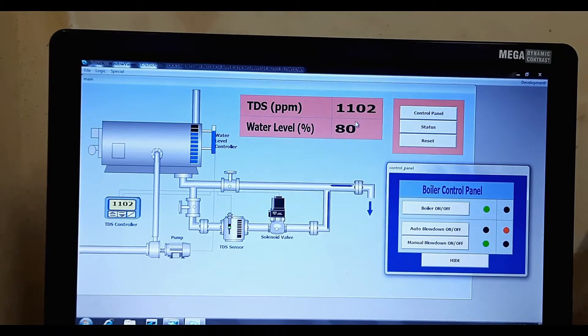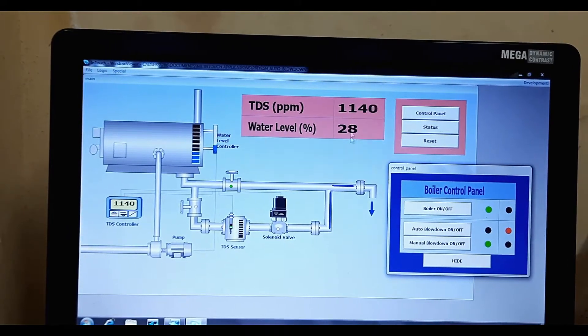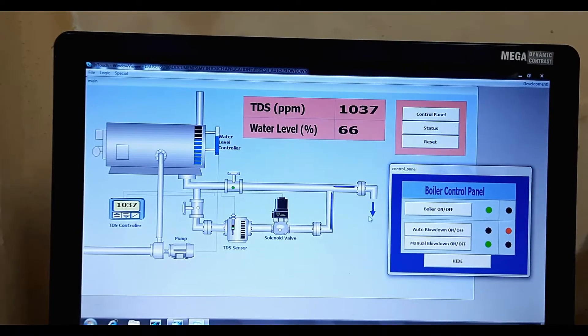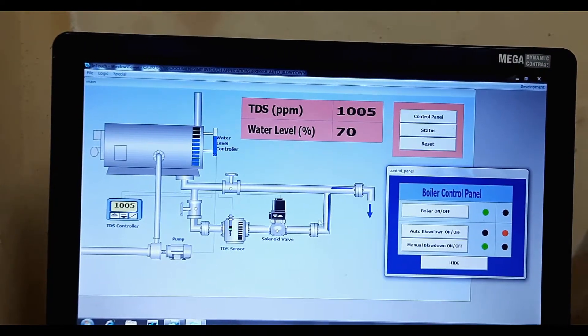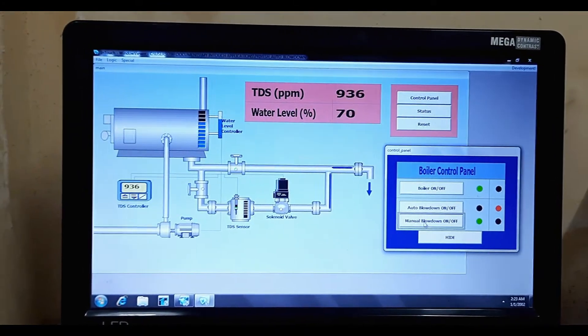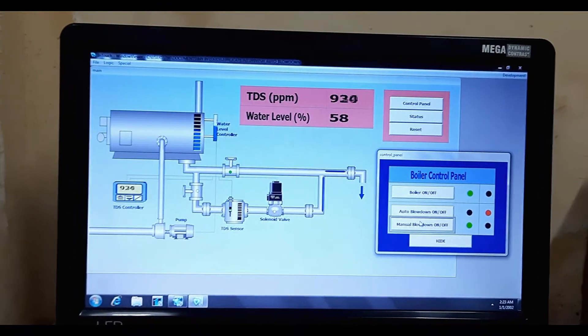Now if I turn on manual blowdown, then you can see simply the TDS starts decreasing and this becomes filled, so the water is going out. This is what usually happens in industries, small industries, is that there is manual blowdown and it's turned on and off by like a boiler operator.